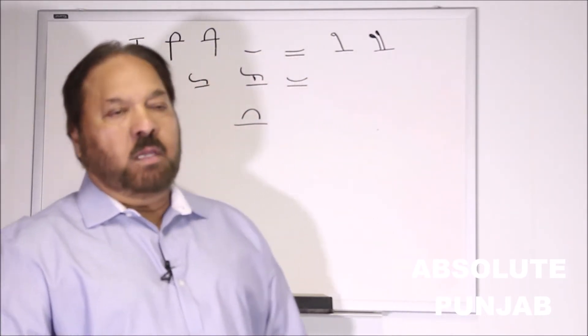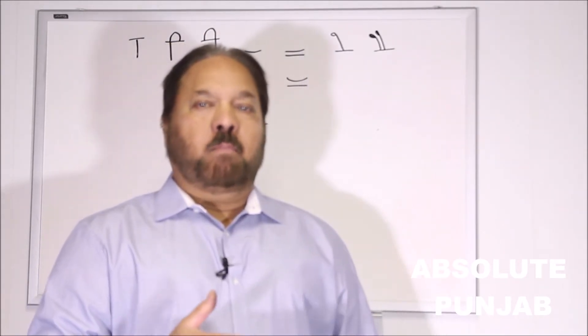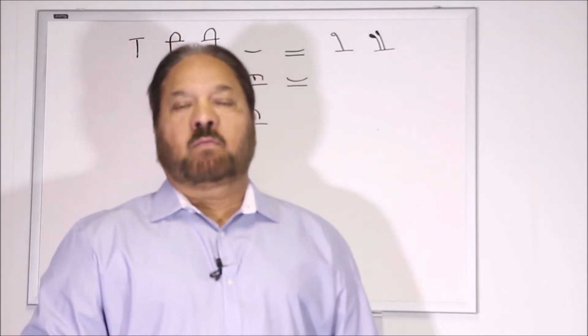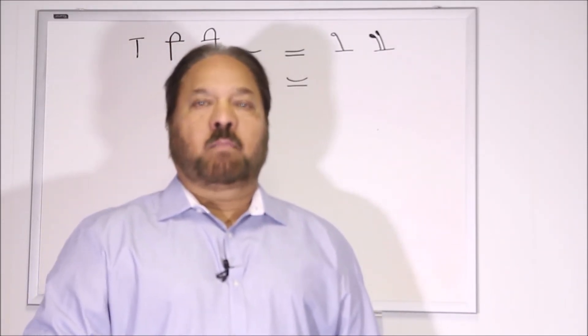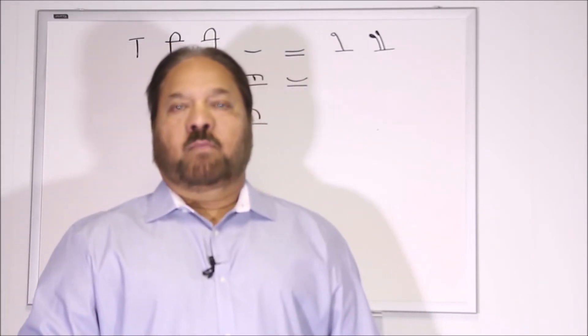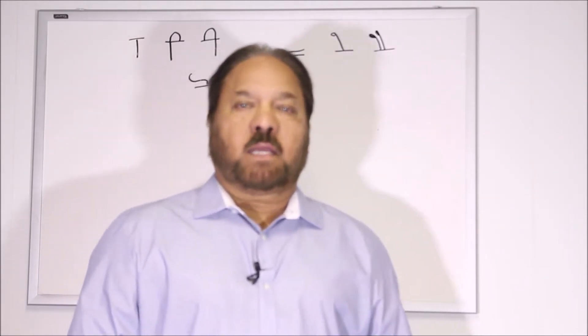So for example, if we want to write down Amb, Eda, Baba, then we put Tippi on the top to make the sound Amb, or Kanna, or Ramba, or Jindra, Bindar, something like that.